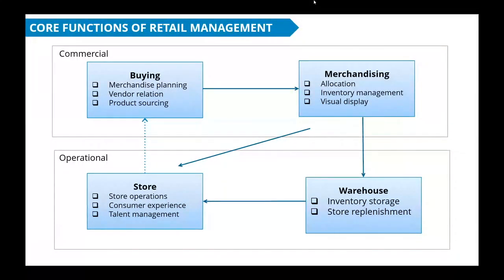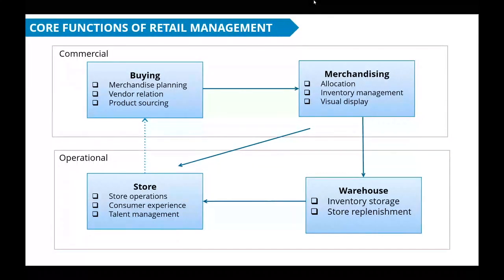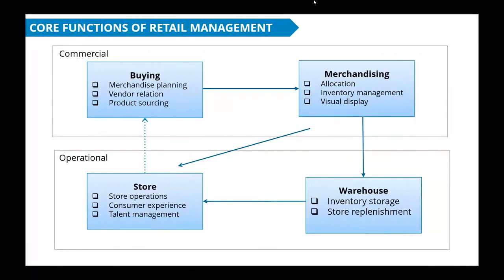All four departments are interconnected and work together to make a retail business successful. For example, if the buying department buys products at the right time but the merchandising department fails to manage inventory, we cannot provide a better experience to the customer. This is where automation comes into action — providing automation between these four departments helps manage the retail business in a better way.